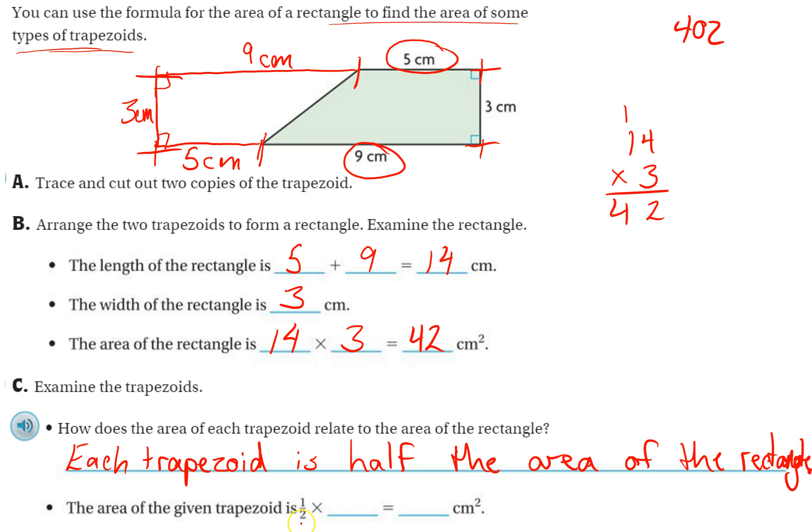The area of the given trapezoid then is half of 42. And remember, 1 half is equal to 0.5. These are the same. So if you want to get it into decimals, try to remember, 1 half is the same as 0.5. And when you're multiplying a half by 42, what you're really doing is saying, what is half of 42? Or you're dividing 42 by 2. So 21 centimeters squared would be the area of each of these trapezoids.